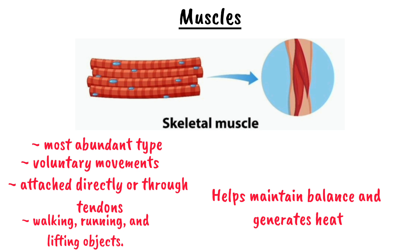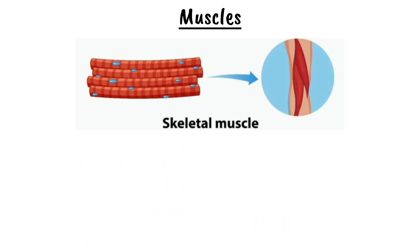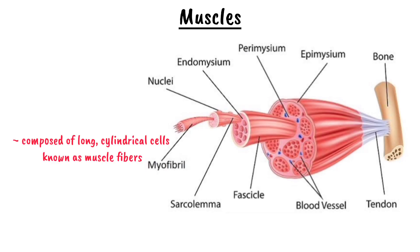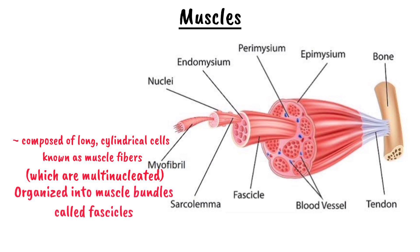Skeletal muscle is composed of long cylindrical cells called muscle fibers, which are multi-nucleated, meaning they contain multiple nuclei. These muscle fibers are organized into bundles called fascicles, which are surrounded by a layer of fibrous connective tissue called perimysium. Multiple fascicles come together to form a complete muscle, which is encased in another connective tissue layer known as epimysium.